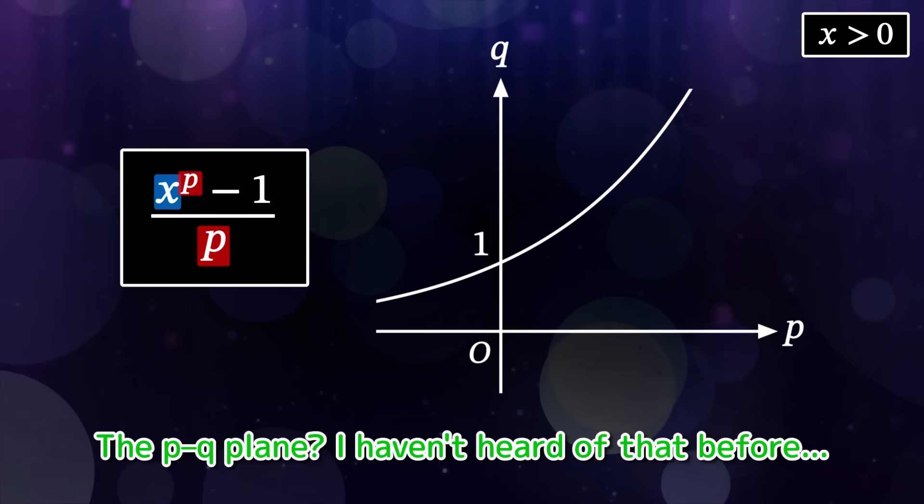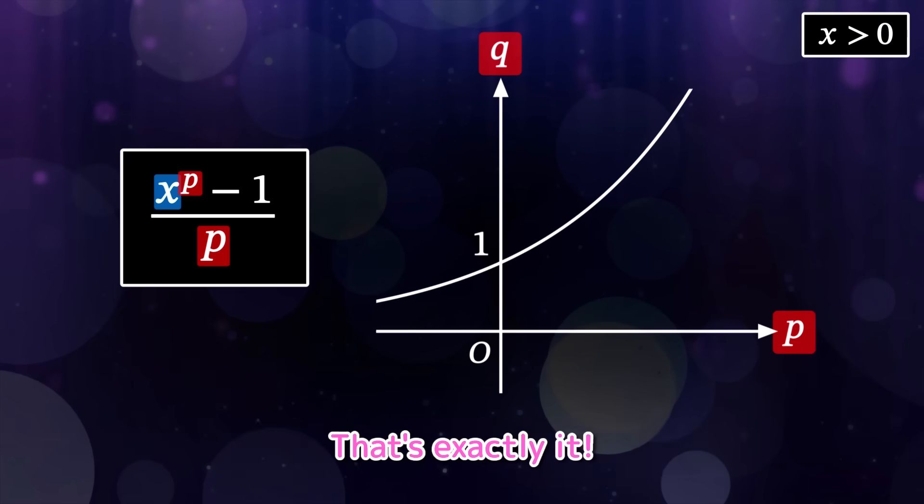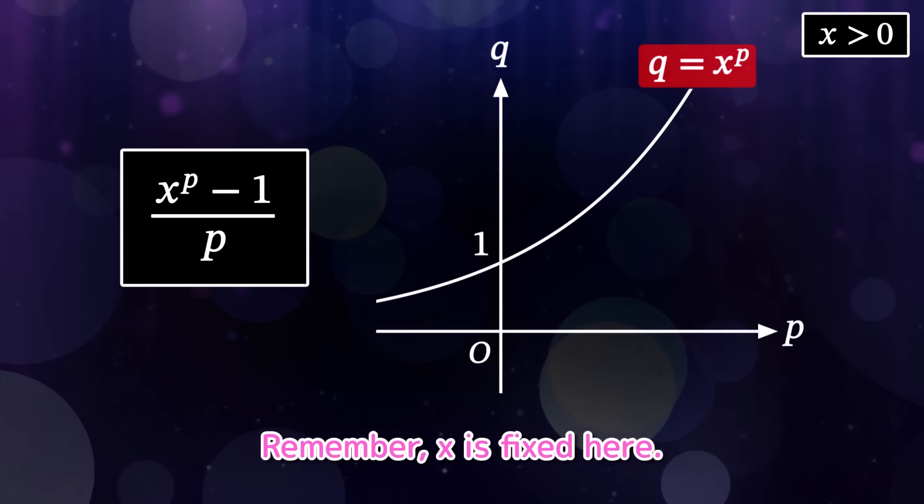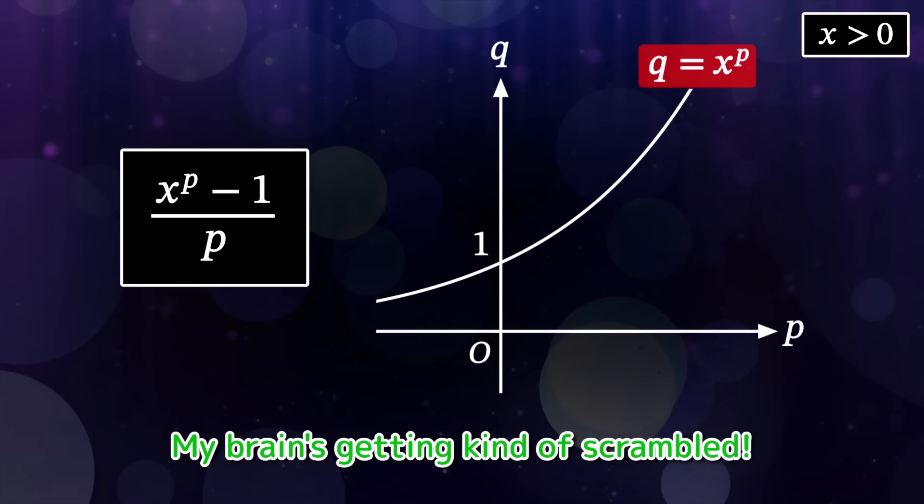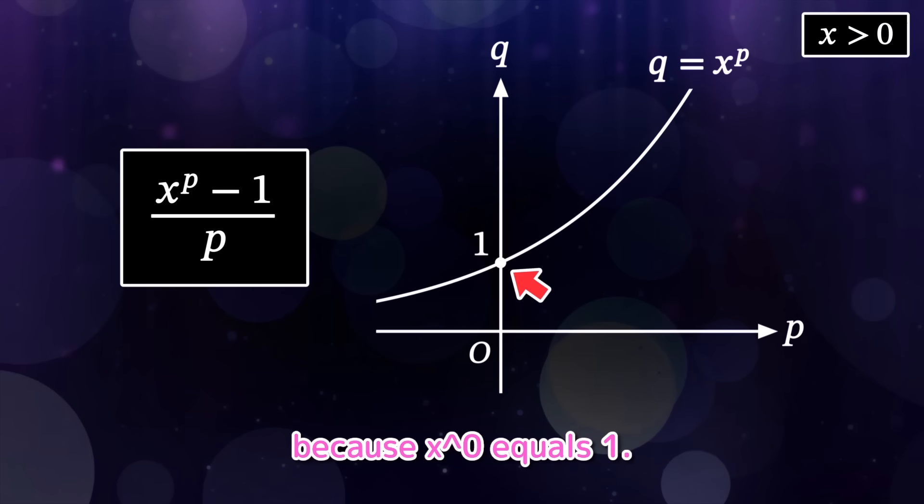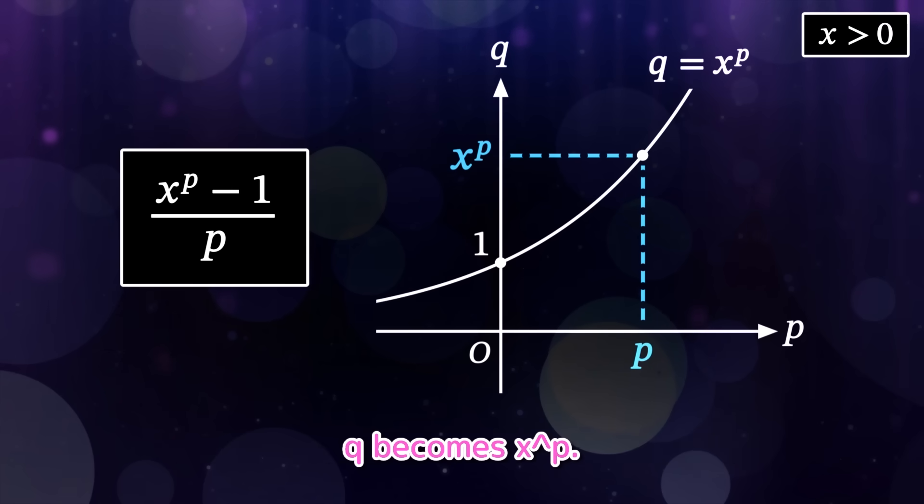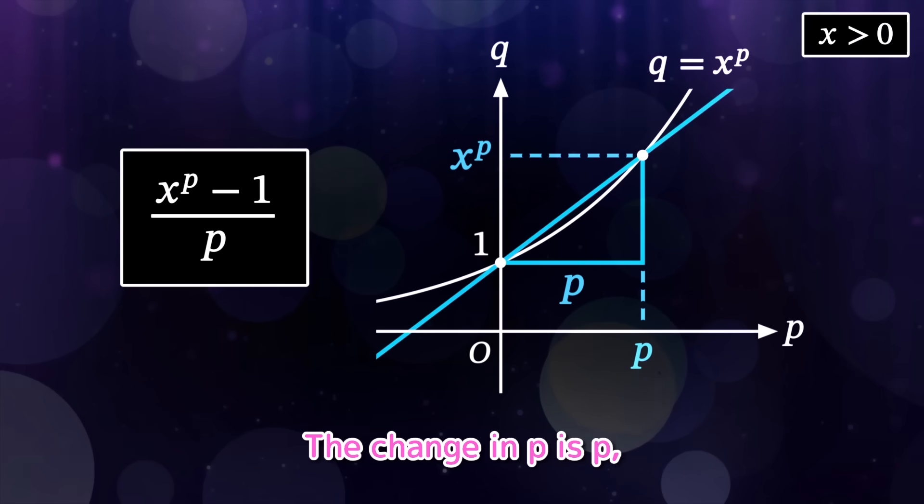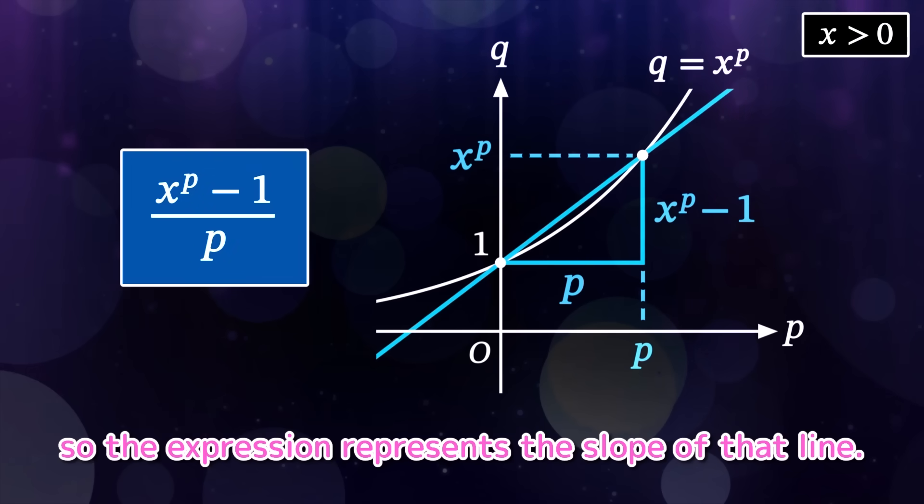Let's try to understand this expression visually. It might feel a bit tricky, but since x is fixed, and p is the variable here, we should use the pq plane instead of the xy plane. The pq plane? I haven't heard of that before. So p's on the horizontal axis and q on the vertical, right? That's exactly it. Now let's look at the function q equals x to the p. Remember, x is fixed here. As p varies, q changes accordingly. My brain's getting kind of scrambled.